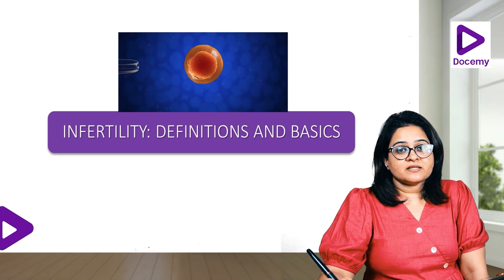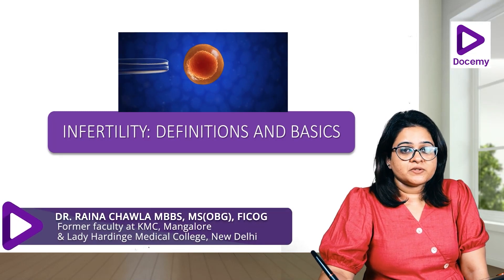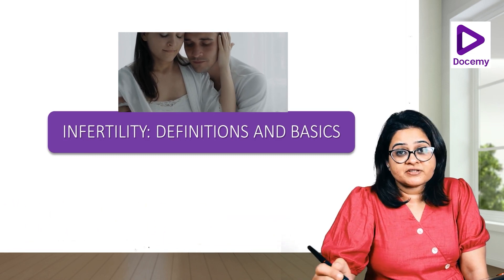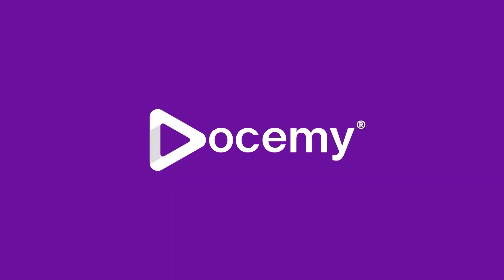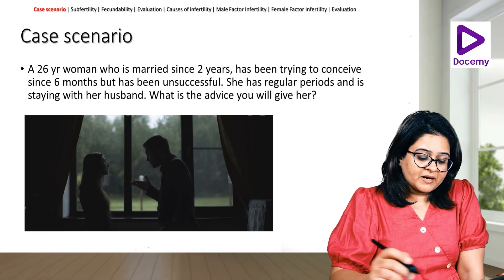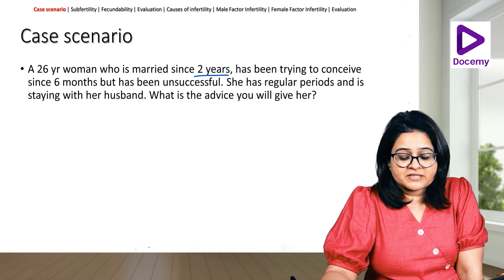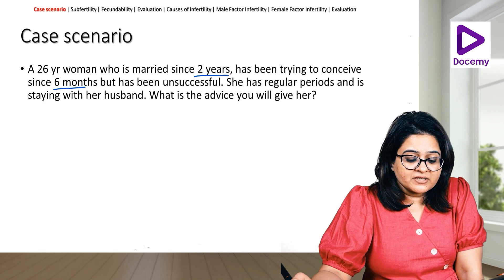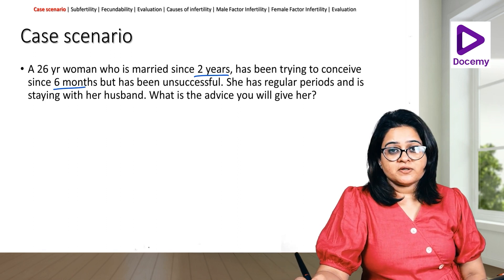We'll be discussing infertility. The first topic under this segment is definitions and basics. Once we discuss this, we will move on to different causes of infertility and then how we manage infertility. The case scenario is a 26-year-old woman who is married since two years and has been trying to conceive since six months but has been unsuccessful. She has regular periods and is staying with her husband.